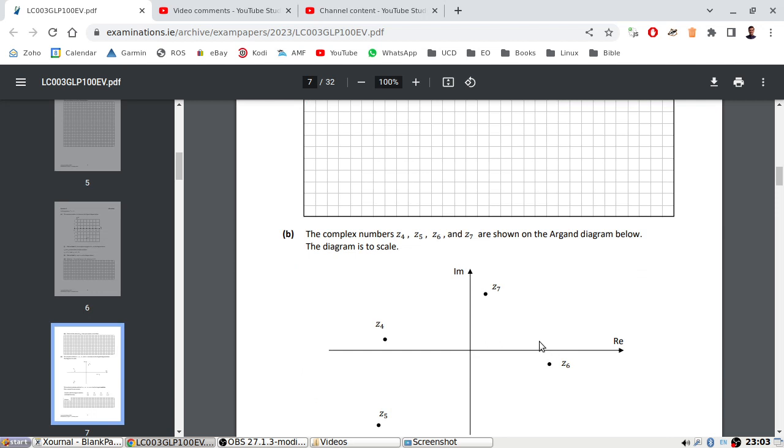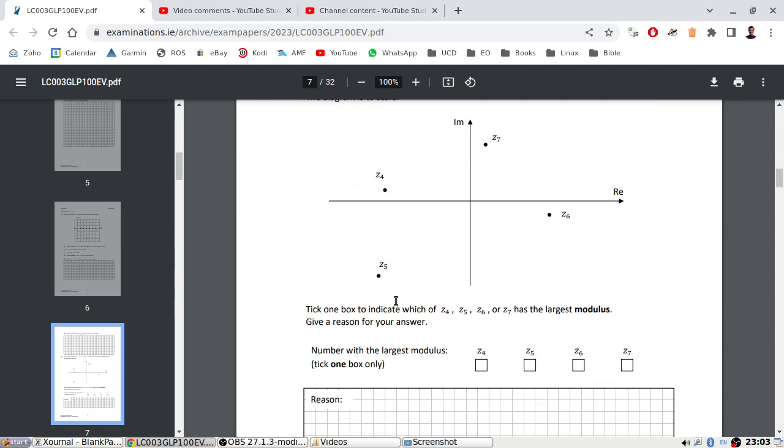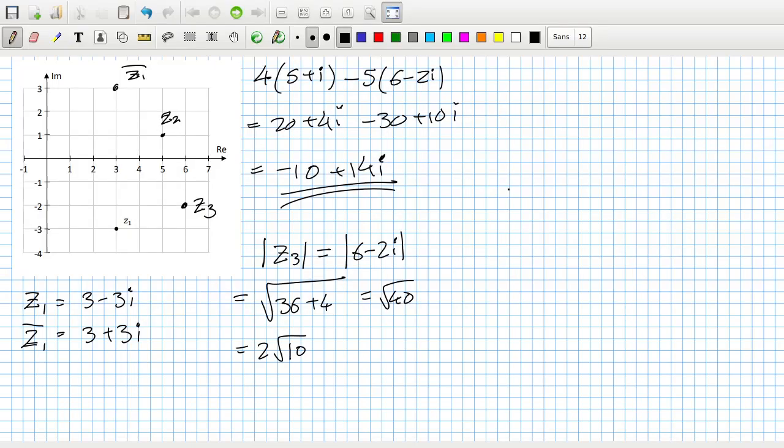The complex numbers 4, 5, 6, and 7 are shown on the diagram below. The diagram is to scale. Tick one box to indicate which of the four has the largest modulus and give your reason. If my eyes do not deceive me due to the tiredness, it looks like Z5 is the answer because it is furthest from the origin.